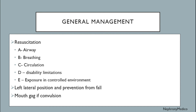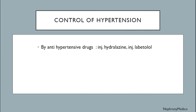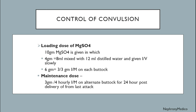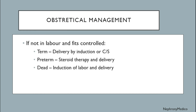Control of hypertension by antihypertensive drugs: injection hydralazine, injection labetalol. Control of convulsion by loading dose of magnesium sulfate 10 grams — 4 grams (equal to 8 ml) mixed with 12 ml distilled water given intravenously slowly, and 6 grams (3 grams each) intramuscular on each buttock. Maintenance dose: 3 grams every 4 hours intramuscular in alternate buttocks for 24 hours post-delivery from last attack.